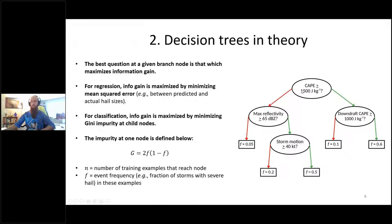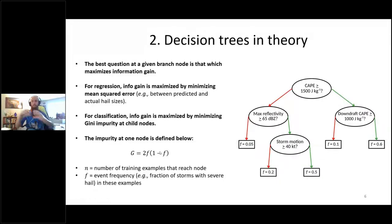A perfect question would split the data into pure child nodes. Say you have 1,000 storms — 100 with severe hail and 900 without. If the data followed a perfect CAPE relationship, you'd end up with one child node of 100 storms all producing severe hail and another of 900 storms producing none. In that case, the Gini impurity at both child nodes would be zero because you've created a perfect split with one node containing only severe hail storms and one with only non-severe.